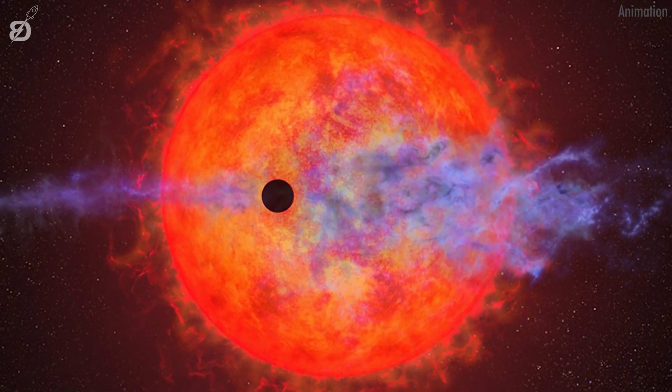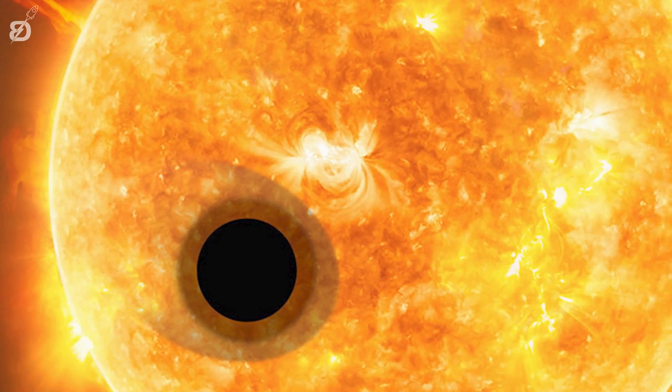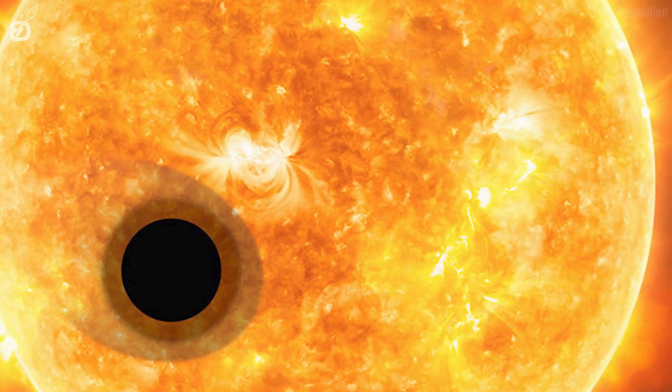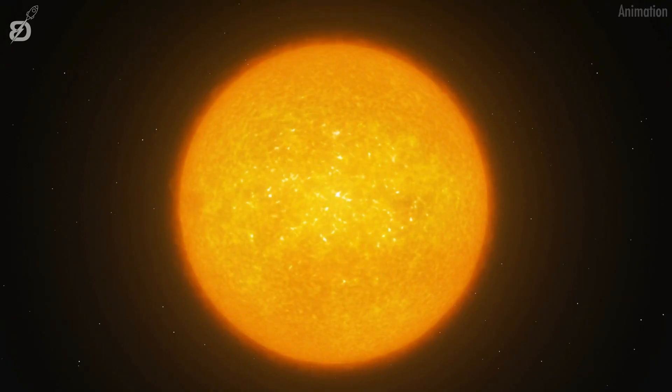Sometimes, when 55 Cancri E passes behind its star, no visible light comes from the planet itself, while other times the planet emits a strong visible light signal. In infrared light, there's always a signal, though that signal varies in strength.